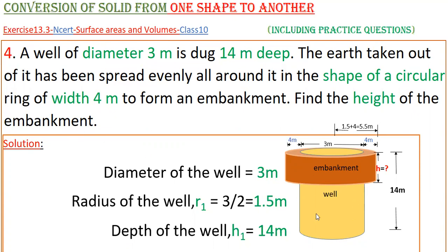So here this is the well of diameter 3 meters and height is 14 meters, and the earth taken out from this well is evenly spread out around this well like an embankment. The width of the embankment is given as 4 meters, and the height of this embankment we have to find.